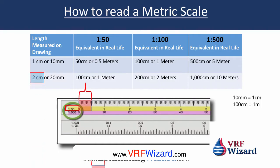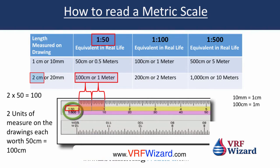Now, if you have 2 centimeters, you can see on the top scale there — 1 in 50 — you need 2 centimeters to equal a meter on a 1 in 50 scale. That's because 50 centimeters is only half a meter, so you need 2 of them to equal a meter. 2 times 50 is 100 — two units of measure on the drawing, each worth 50 centimeters of the real building component, is 100 centimeters, or a meter. So on a 1 in 50 scale, you need 2 centimeters to equal a meter.